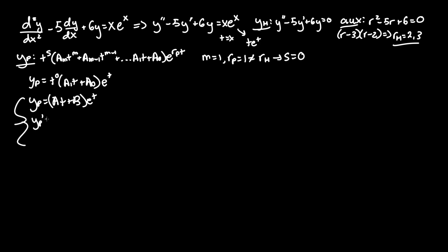So yp prime, and you can see we have product rule since we have t times e to the t. Product rule is f prime g plus f g prime, where f is the first term and g is the second. So f prime is just a, everything else gets dropped, keep g the same, plus now f by itself, at plus b, times g prime. The derivative of e to the t with respect to t is still e to the t, and that's it.